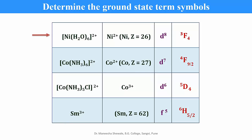When asked to determine the ground state term symbol for a metal atom or ion in a complex, first find the oxidation state. For the aqua complex of nickel with +2 oxidation state, the configuration is D8, giving term symbol 3F4. For cobalt complexes with different oxidation states, the configuration changes from D7 to D6, giving term symbols 4F9/2 and 5D4 respectively. For samarium with +3 oxidation state, it is an F5 system with term symbol 6H5/2.